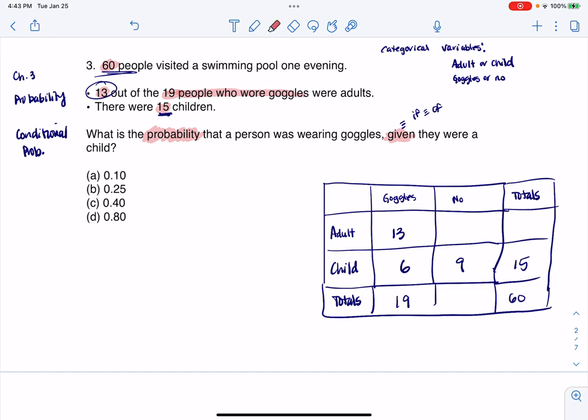Just looking at it, if this is 60 and this is 15, this cell has to be 45. And if this cell is 45 and this is 13, through subtraction, this one's gotta be 32. Let me erase the little shadings I did.